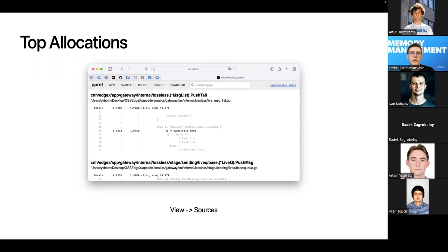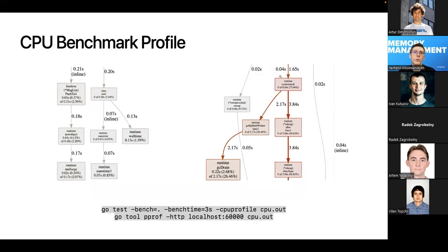Another possible solution for analyzing heap usage is CPU profiling. To run it in testing mode, you can add the CPU profile flag with a file name, then run the pprof tool to start an HTTP server and see the results. CPU profiling can show the components that intensively use the Go allocator or GC functionality. For example, in the picture on the right, our program intensively uses the runtime system stack, some GC functionality, and allocates on the mheap.